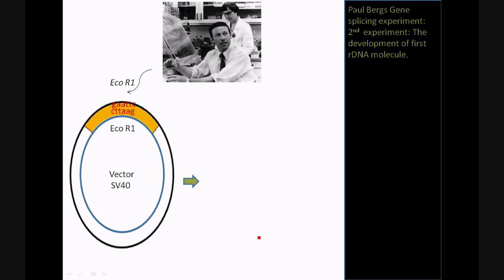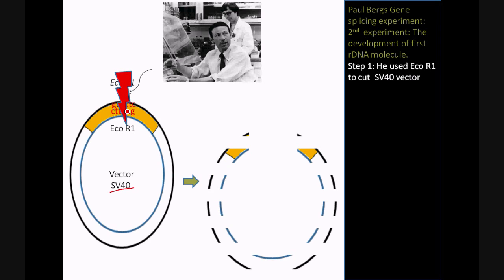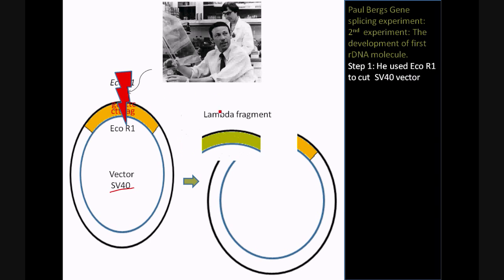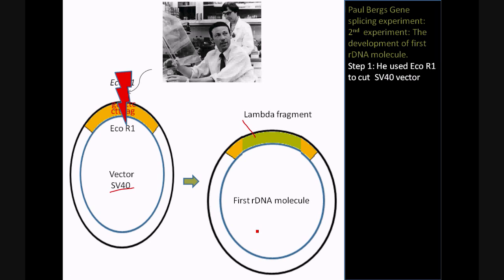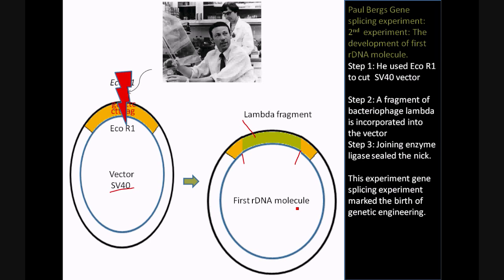The second major discovery was Paul Berg's gene splicing experiment. He was the first to develop a recombinant DNA molecule. He used a vector called the SV40 vector and used the restriction enzyme EcoRI to make a cut in that vector. He then incorporated a fragment from lambda phage into that vector. You can see the lambda phage fragment has been integrated — this was the first recombinant DNA molecule. The single-stranded nick at this region was sealed by a ligase enzyme. This gene splicing experiment marked the birth of genetic engineering, and Paul Berg is often regarded as the father of modern biotechnology.